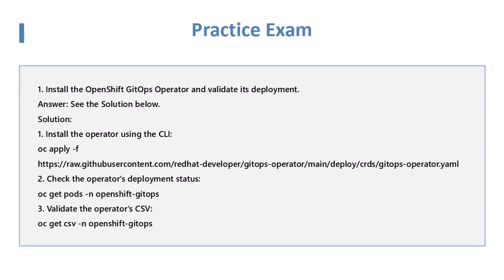Question 1: Install the OpenShift GitOps Operator and validate its deployment. Solution: Install the Operator using the CLI. Run 'oc apply -f', then 'oc get pods -n openshift-gitops'. Validate the Operator CSV using 'oc get csv -n openshift-gitops'.